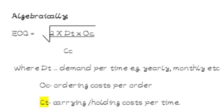The formula for determining the economic order quantity is: EOQ = √(2 × DT × OC / CC), where DT is the demand per time period (yearly, monthly, etc.), OC is the ordering cost per order, and CC is the carrying or holding cost per time period.